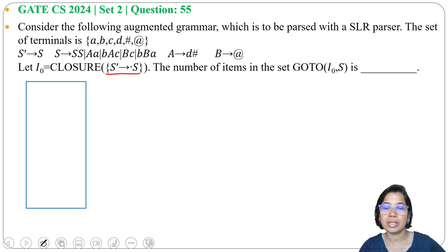why we need to write all the productions of S. So S → •SS, then S → •Aa, S → •bAc, S → •Bc, S → •bBa. Now